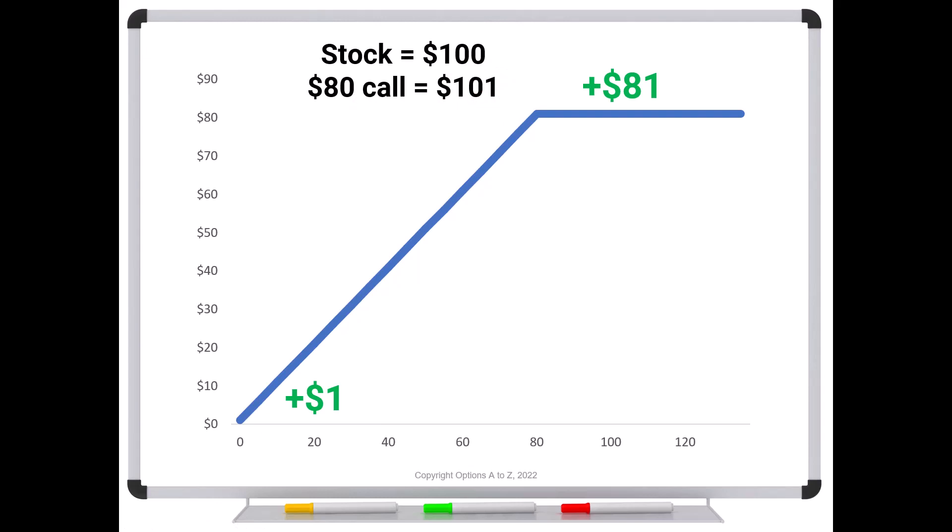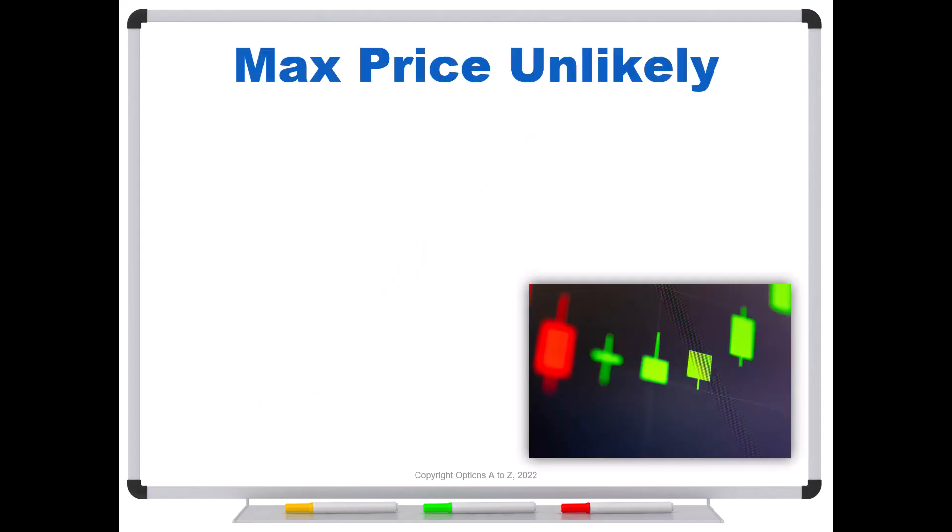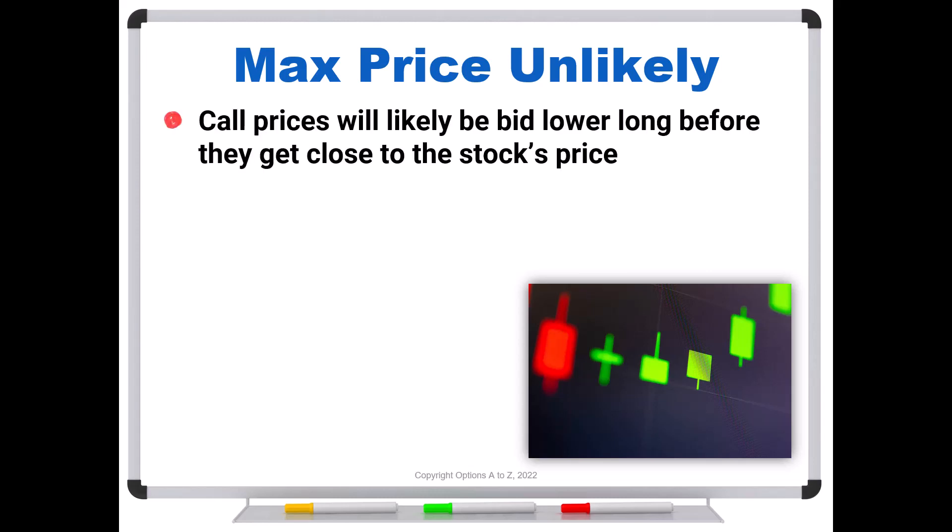So even though I've shown that the maximum price that any call option could be is the stock's price, that maximum price is highly unlikely. And that's why you're never going to see anything that's even remotely close to that high, at least most likely not going to ever see that. So the reason is that call prices will likely be bid lower long before they get close to the stock's price. So as an example, let's say that the stock is trading for a hundred and the hundred dollar call is trading for 60. Now we just looked at an example of this where it was trading for 101. And that of course would set up the arbitrage, but notice we're a long ways from 101, but this would be the risk graph.